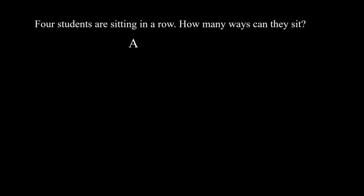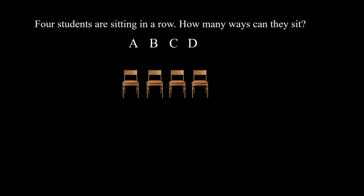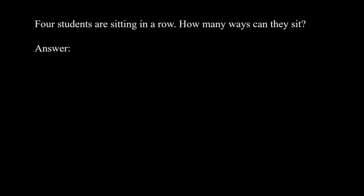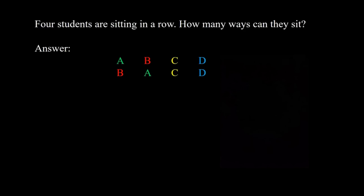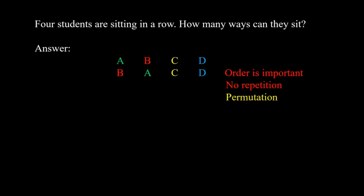Example 3: Four students A, B, C, and D want to sit on 4 chairs, one chair per student. How many ways can they sit? Two different seating arrangements are not the same, so order is important. No one can sit on 2 chairs at the same time, so repetition is not allowed. This is a permutation problem.